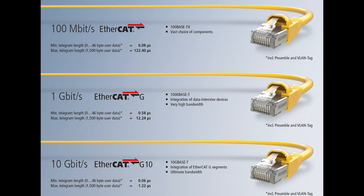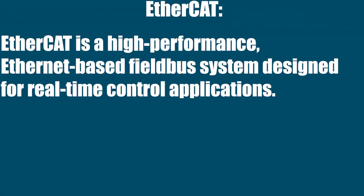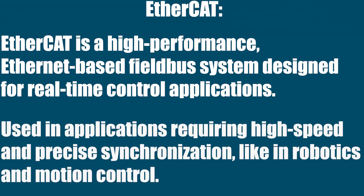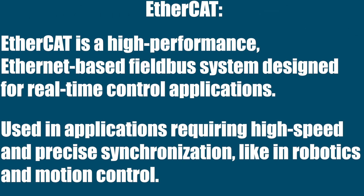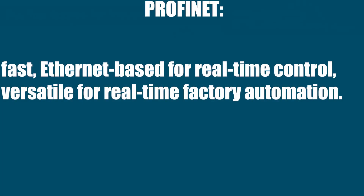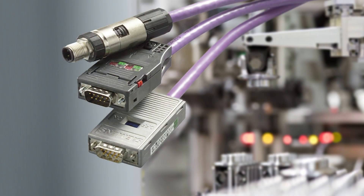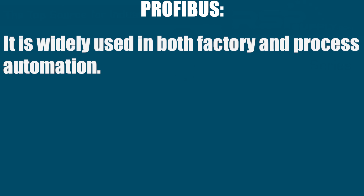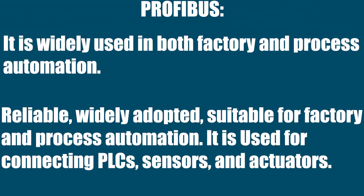There's also EtherCAT — Ethernet for Control Automation Technology. It's a high-performance Ethernet-based fieldbus system designed for real-time control applications, used where high speed and precise synchronization are required, like in robotics and motion control. PROFINET is a fast Ethernet-based protocol for real-time control and versatile factory automation. PROFIBUS is a standard for fieldbus communication in automation technology, widely used in both factory and process automation — very reliable and suitable for connecting PLCs, sensors, and actuators.